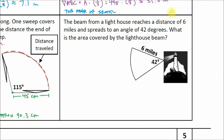The beam from a lighthouse reaches a distance of 6 miles and spreads to an angle of 42 degrees. What is the area covered by the lighthouse beam? Now you can take a look at a picture of a lighthouse. We've got a central angle measure here. Here's the center of our circle. That's the center of the lighthouse. It's 42 degrees. And we know it reaches a distance of 6 miles. That appears to be our radius.